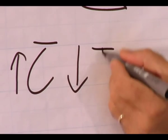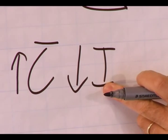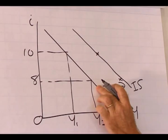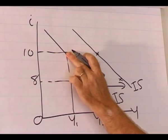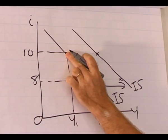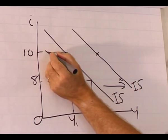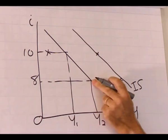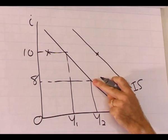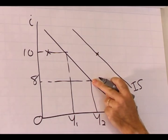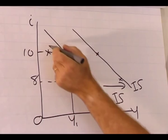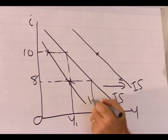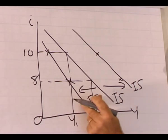Let's take, for example, a decrease in autonomous investment spending. How will this affect the IS curve? Well, autonomous investment spending decreased, so at an interest rate of 10%, demand for goods and services decreased somewhere to the left. Similarly, at an interest rate of 8%, there is a decrease in demand for goods and services. If we link these points, we see the IS curve has shifted to the left.